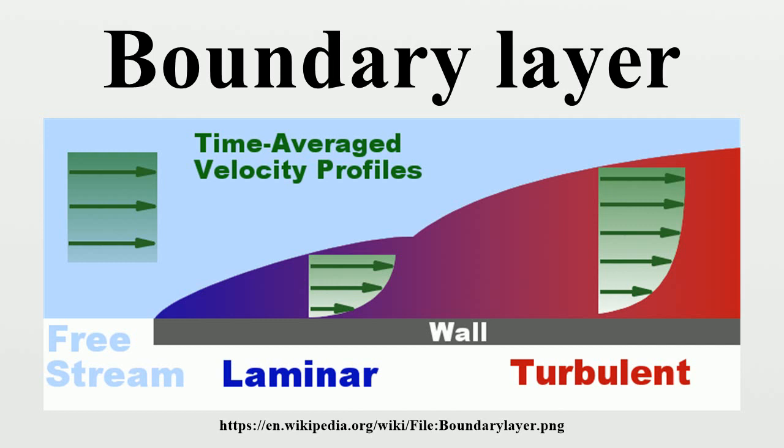The flow velocity will then increase rapidly within the boundary layer, governed by the boundary layer equations. The thermal boundary layer thickness is similarly the distance from the body at which the temperature is 99% of the temperature found from the inviscid solution. The ratio of the two thicknesses is governed by the Prandtl number. If the Prandtl number is 1, the two boundary layers are the same thickness. If the Prandtl number is greater than 1, the thermal boundary layer is thinner than the velocity boundary layer. If the Prandtl number is less than 1, the thermal boundary layer is thicker.